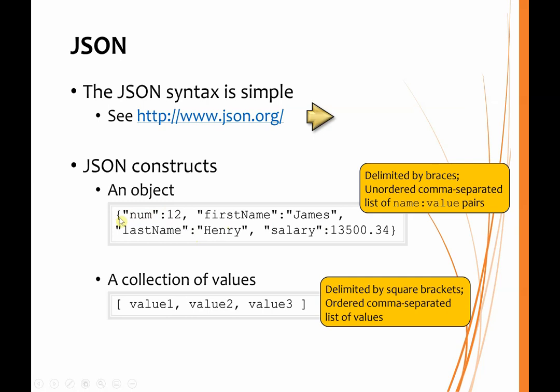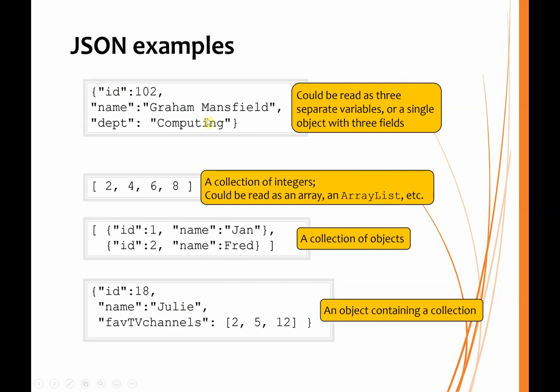Just a collection of values — it might be a list, for example — is delimited by square brackets and just has a set of values separated by commas. If we were given a JSON string, we could identify it either as an object with three fields or as three separate variables. If presented with another JSON string, it could be interpreted as an array of values, or an array list if you're working in Java.